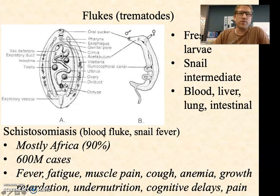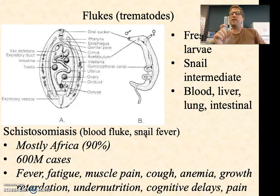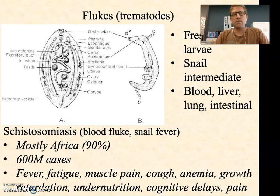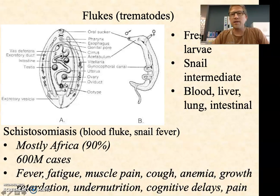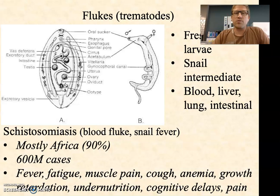Probably the most important of the flukes is schistosomiasis, caused by Schistosoma, a blood fluke sometimes referred to as snail fever because there's a snail intermediate critical for larval development. Most of the 600 million cases around the world are found in sub-Saharan Africa — about 90%. Symptoms include fever, fatigue, muscle pain, cough, and anemia because they're stealing a lot of blood. Also growth retardation, undernutrition, and cognitive delays — that poverty cycle again. Nowhere in there do you see death; people aren't dying, they're being beaten up. The morbidity is really high.